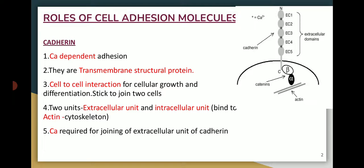The extracellular unit is something found outside the cell, while the intracellular component is seen inside the cell. The intracellular unit binds to the actin filament, which is a cytoskeleton located inside the cell. For every extracellular unit joining, calcium ions (Ca2+) are always required.